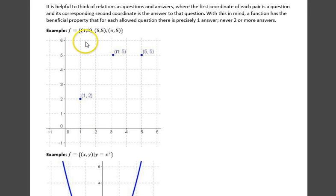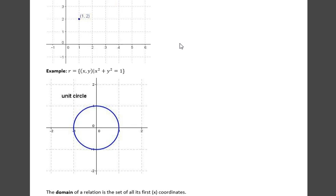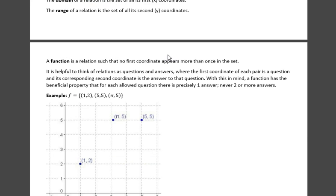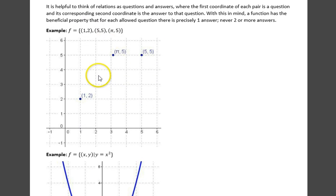For example, if we take our original relation, look up here, the question one had two answers, two and four. If we eliminate one of those ordered pairs, now we have a function.